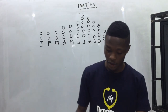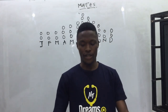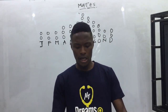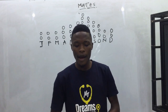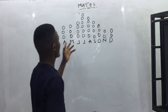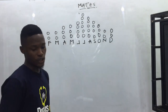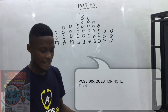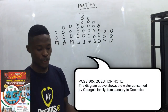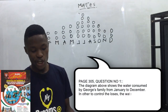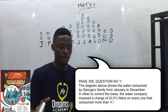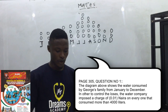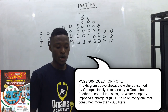Our first question, as you can see on the board, is taken from the nursing school past question page 305, new edition, question number one. I have given a sketch on the board. The diagram shows the water consumed by George's family from January to December.